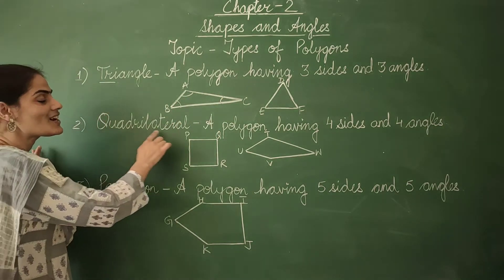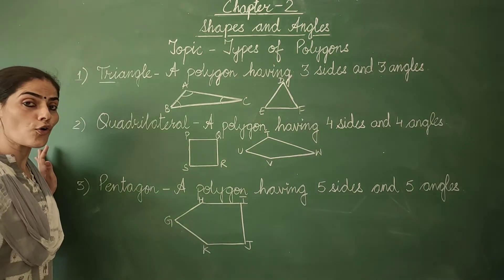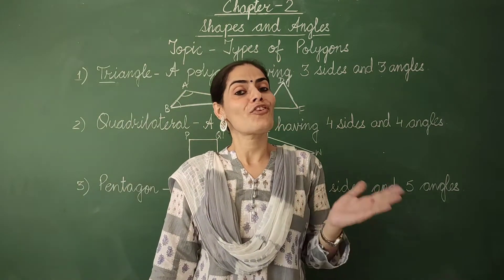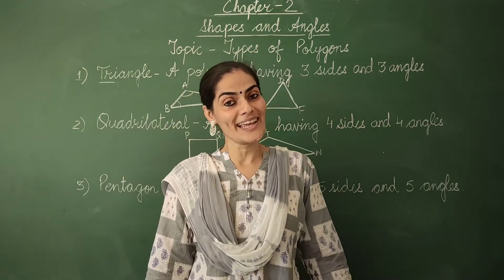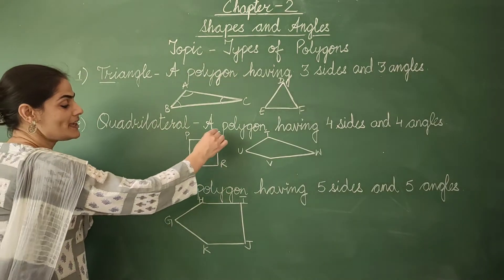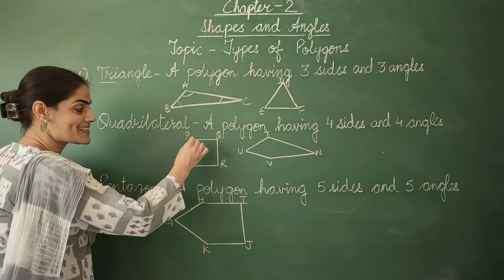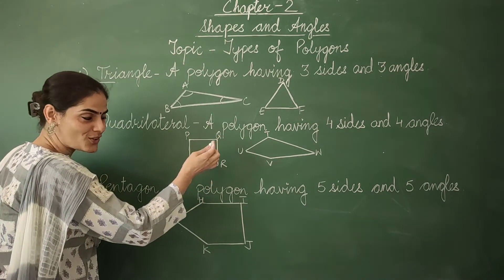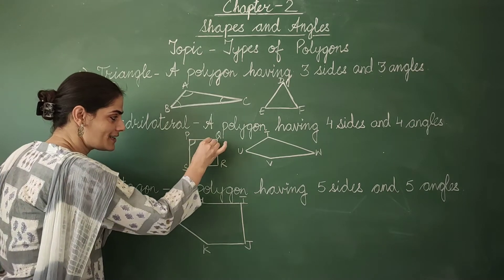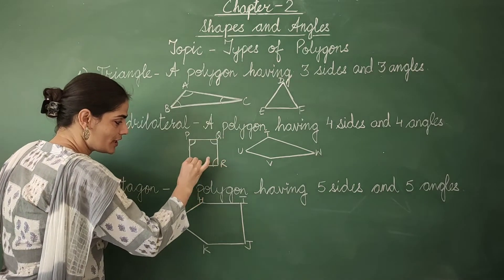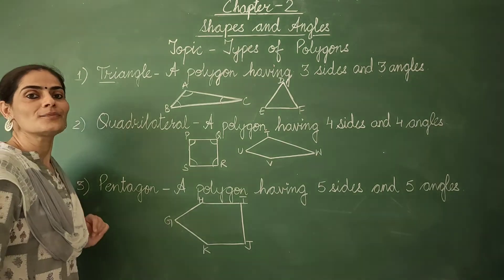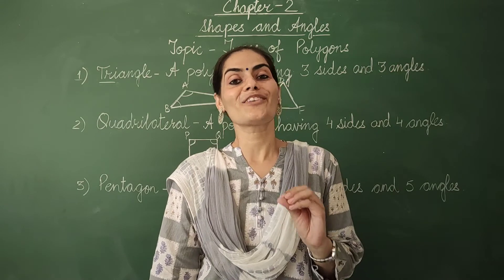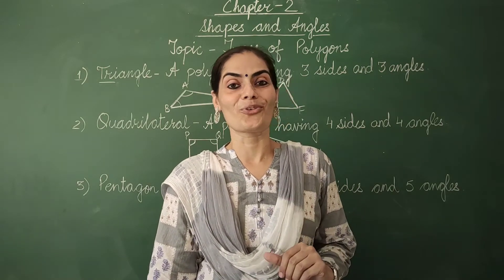Next is a quadrilateral. Quad means four. So a polygon having four sides and four angles is a quadrilateral. Look at this figure P, Q, R, S — it has four sides and four angles. So a quadrilateral is a polygon having four sides and four angles.